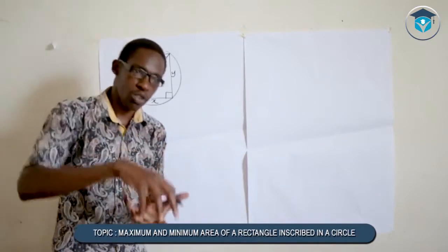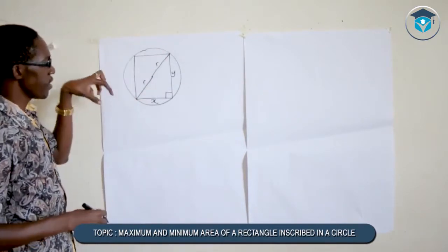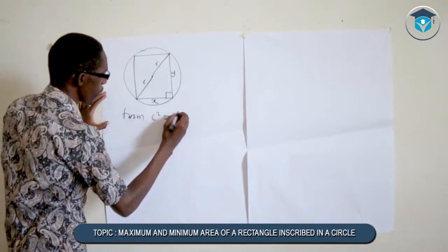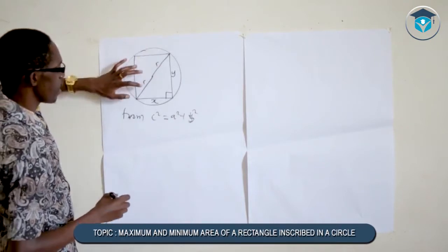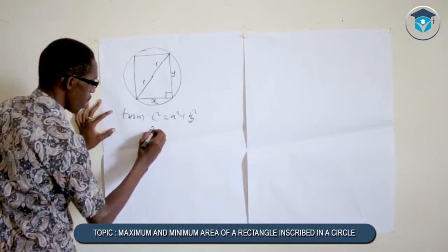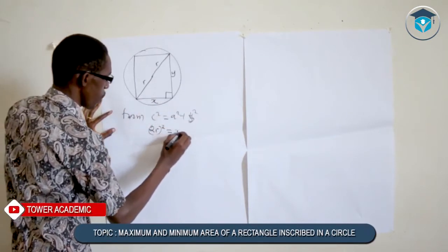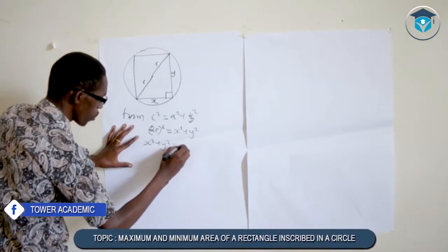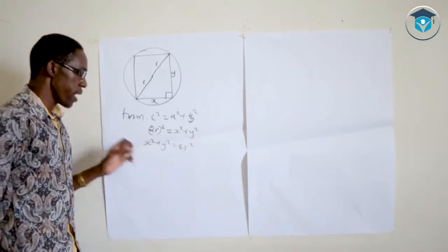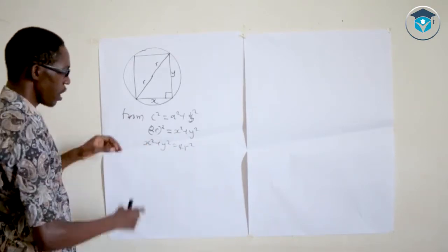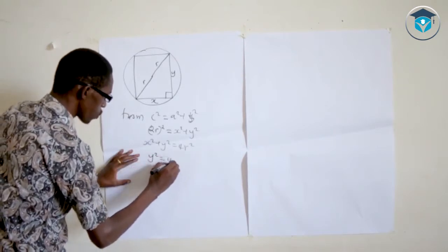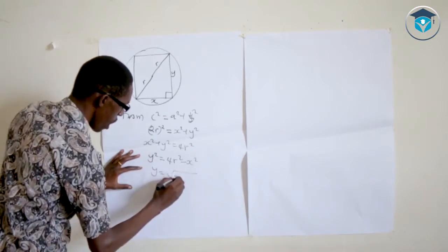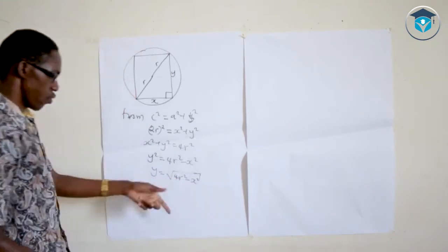The rectangle is inscribed inside the circle. Using the Pythagorean theorem, c² = a² + b², where c is the diagonal which equals 2r (the diameter). So we get x² + y² = 4r². Solving for y: y² = 4r² − x², which gives y = √(4r² − x²). That is the value of y.